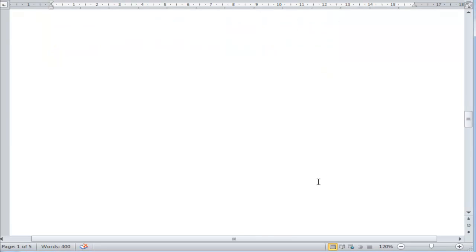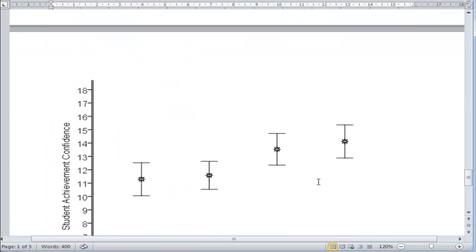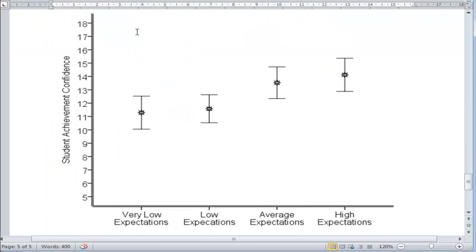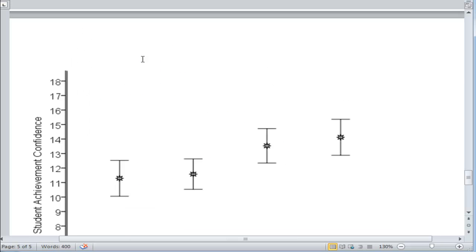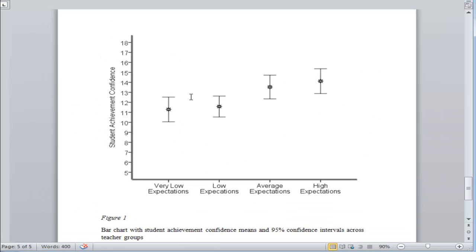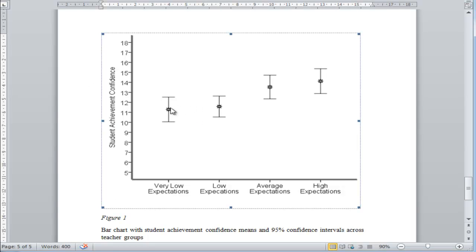And here are the means reported in an error bar type of plot. It's a little bit big. Let's shrink that a bit. There we go. And the only difference is that I've got this very low expectation group, and you can see that there does seem to be a linear increase.